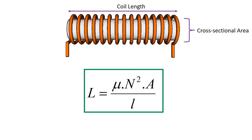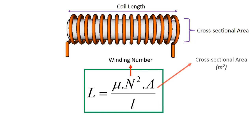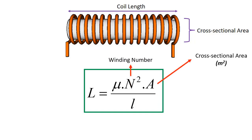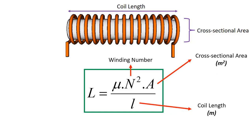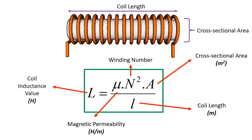The inductance value of the coil is found with this formula. Here, N is the winding number, A is the cross-sectional area, L is the coil length, and μ is the magnetic permeability. The unit of the coil is also Henry.